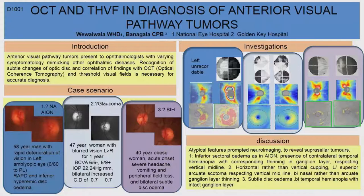The most striking feature is the hemibinasal thinning of the ganglion cell layer. So this was again suspicious, and she actually had a pituitary tumour.